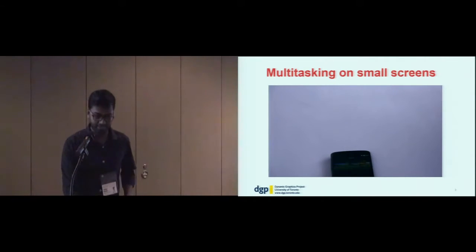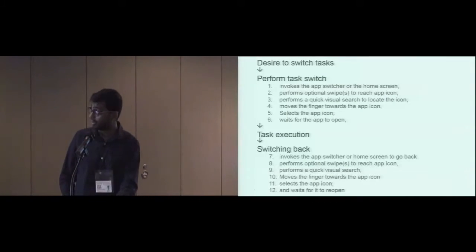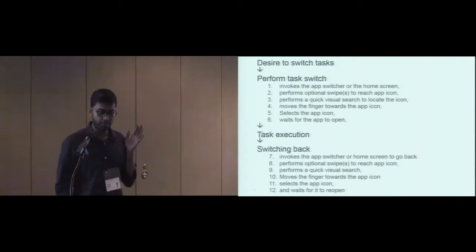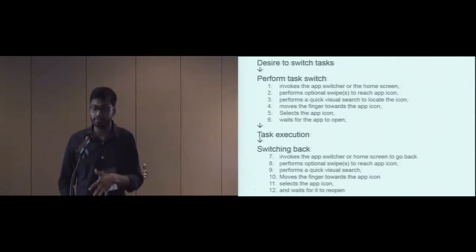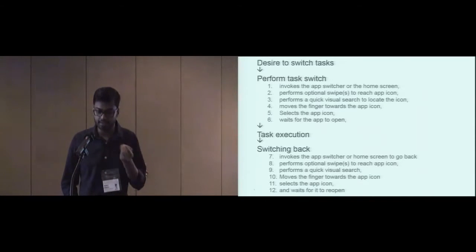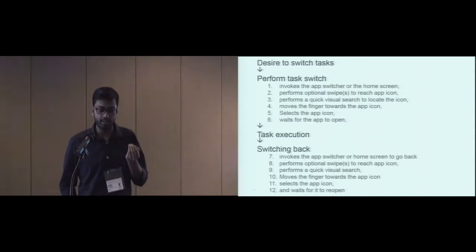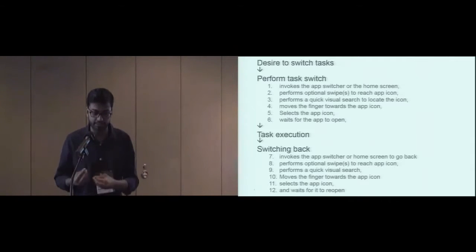So what exactly is happening here? If you look at the micro steps involved, starting with the user's desire to switch apps, there are in total 12 of them — so many that you probably can't even read them on the slide. To perform a simple task switch, the user first invokes the app switcher or the home screen, then performs optional swipes to reach the app icon, does a quick visual search to locate the icon, moves the finger towards the icon, selects it, waits for it to open, and then finally gets to perform the new task. To switch back, all the steps need to be performed again.